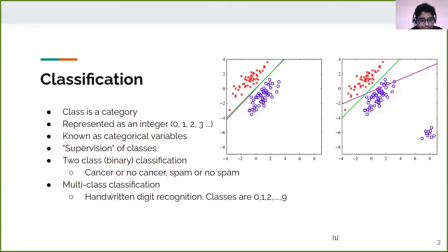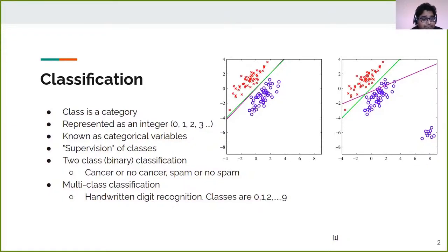There can be two kinds of classification. One is binary, where there can be only two classes. For example, it can be cancer or no cancer — cancer represented as 0 and no cancer as 1. Similarly, we can have spam or no spam classes for spam filtering tasks. In addition to binary classification, we can have multi-class classification, where the dataset can have more than two classes. For example, in a handwriting digit recognition dataset, there can be 10 classes, each belonging to a digit: 0, 1, 8, 7, and so on.